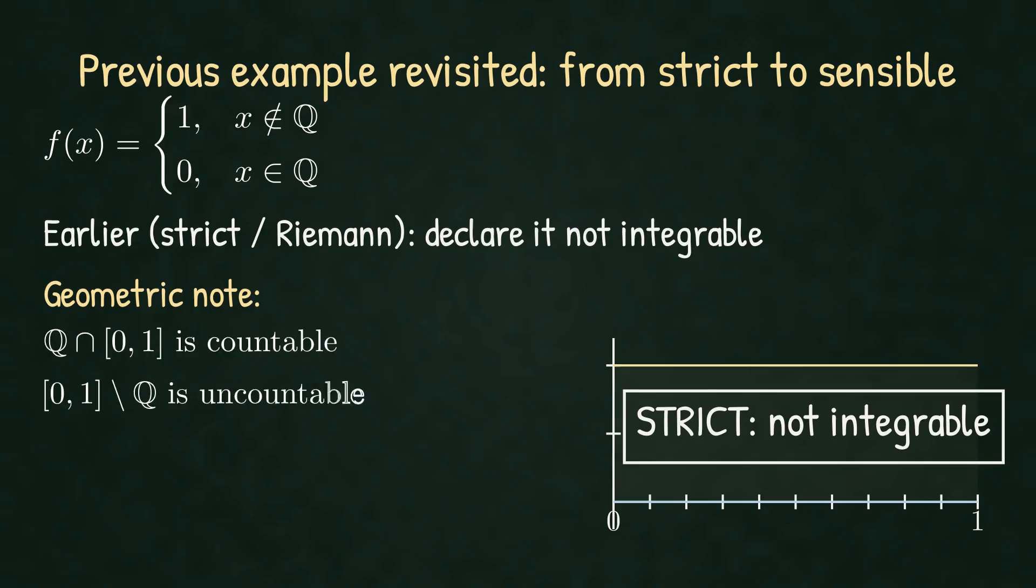But here is the geometric insight that changes kind of everything. The rationals are countable. They form a dust scattered thinly. The irrationals on the other side are uncountable. They fill the space. Can we judge equality up to this tiny set of rationals? Or can we be more lenient but still sensible?